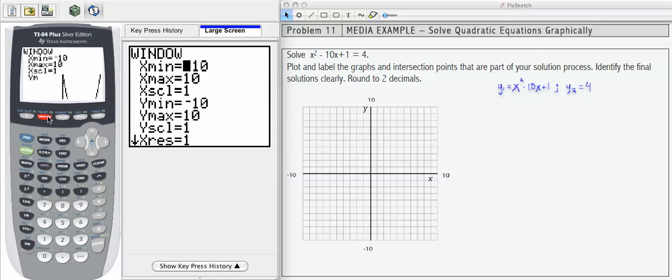I'm going to go back to my window on my calculator. I'm going to go to x max and I'm going to try 15 as my next option. Then I'm going to press graph.